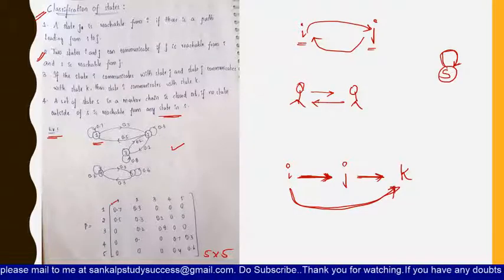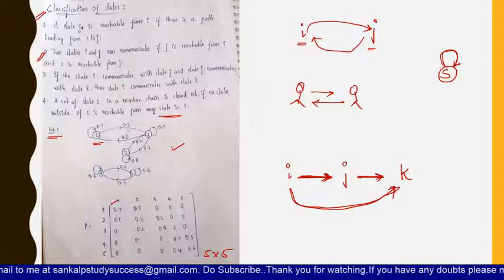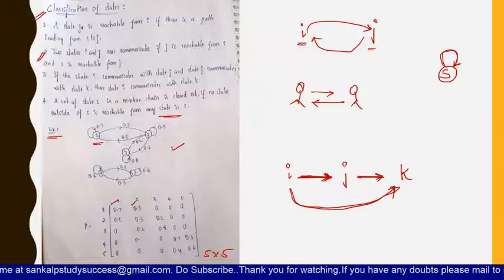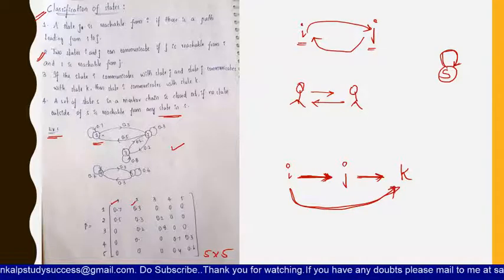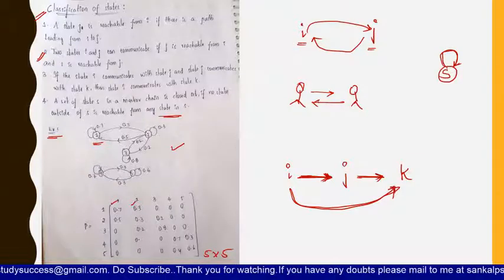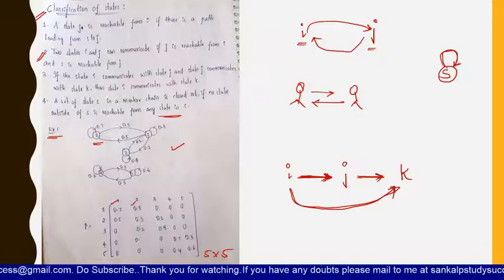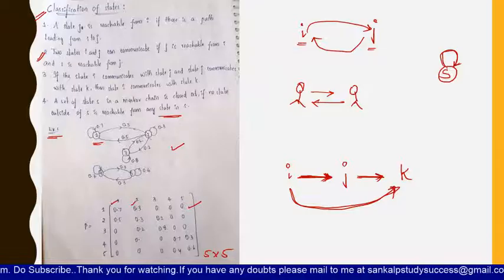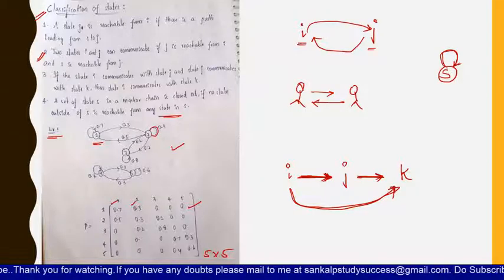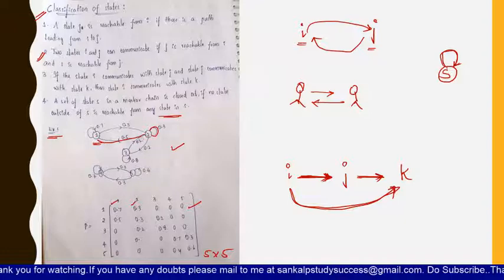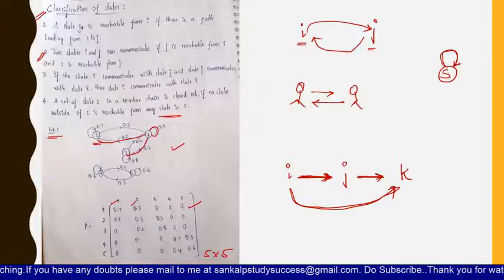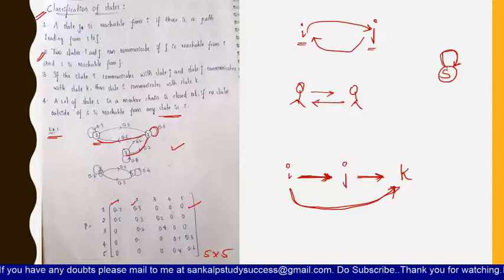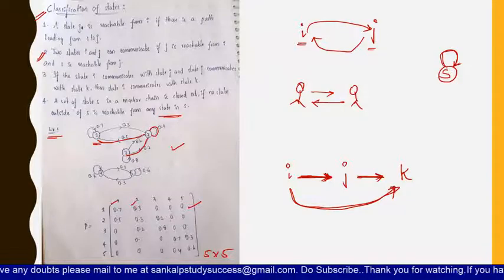From state one, there is also a path from one to two with a value of 0.3. There is no path from one to any other states, so three, four, and five will have the value of zero. From state two, there are paths to itself, to one, and also to three with their respective values, but no path from two to four and five, so those are zero.